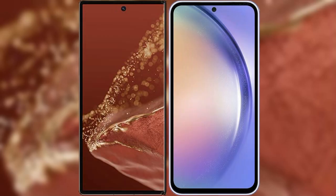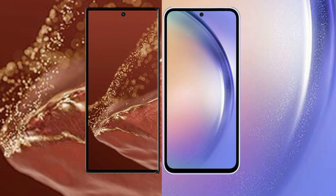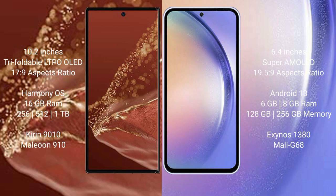I will compare the new Wahabamate XT Ultimate with Samsung Galaxy A54. Wahabamate XT Ultimate has a 10.2-inch triple foldable LTP LED display and Exynos processor 17.9. Samsung Galaxy A54 has a 6.4-inch Super AMOLED display and Exynos processor 19.5.9.